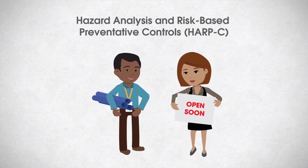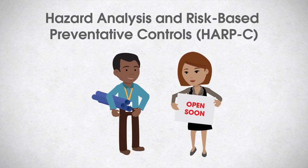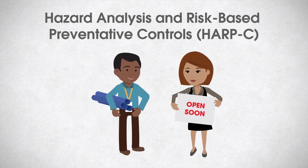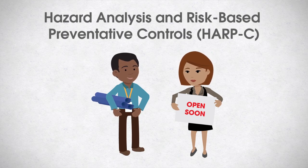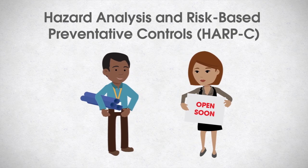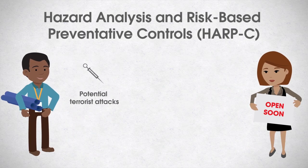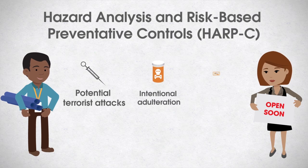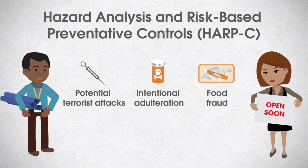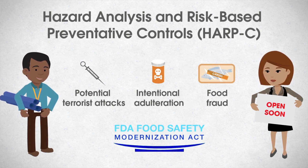Hazard analysis and risk-based preventive controls, or HARPC, is the system used to control the different hazards found in facilities that manufacture food. It is the process that food companies use to implement food safety plans. Unlike the hazard analysis and critical control point, or HACCP, HARPC includes planning for potential terrorist attacks, intentional adulteration, and food fraud. HARPC is not a global standard; it is an updated U.S. standard that was incorporated into the Food Safety Modernization Act in 2012.